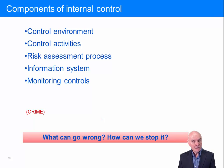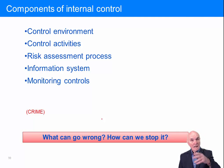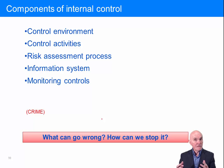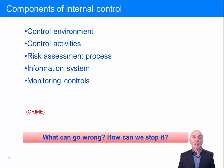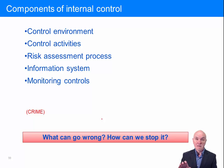When you're looking at internal control systems and assessing them — and you will have to do this in exam questions — they will describe maybe a sales system or a wages system, and you have to point out where there may be weaknesses. Always think: what can go wrong? Remember the private finances analogy — have I paid that invoice, maybe I've paid it twice, have I paid it on time, what was that amount coming out of my bank account? These can all go wrong in simple personal finances. Think what can go wrong in a large business with thousands of transactions.